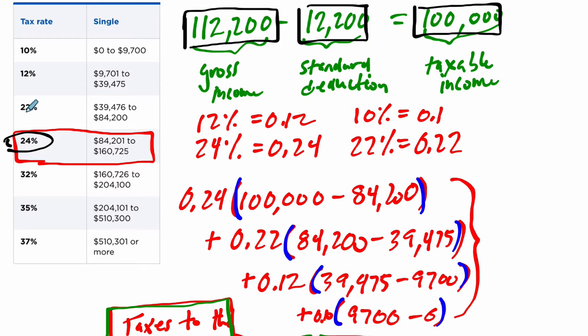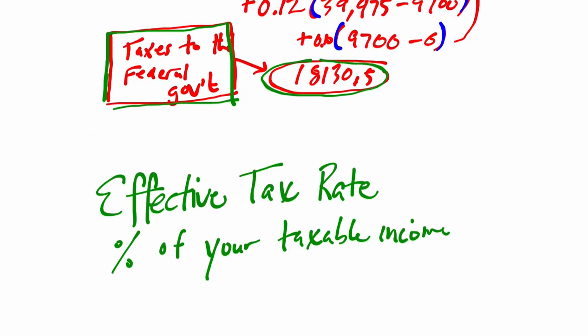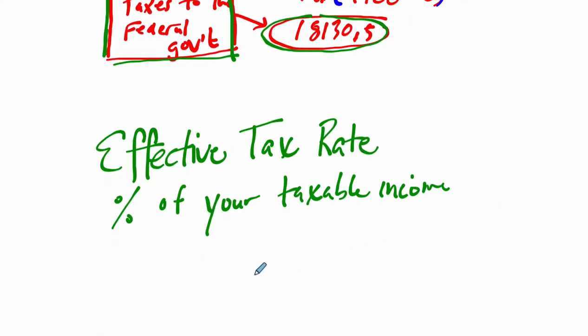But the marginal tax rates change based on the part of your income that you're looking at. So if you were to say my marginal tax rate is 24%, that's not so accurate, because it's only 24% of the taxable income that's in this range right here. What the effective tax rate does is say your taxable income is $100,000.